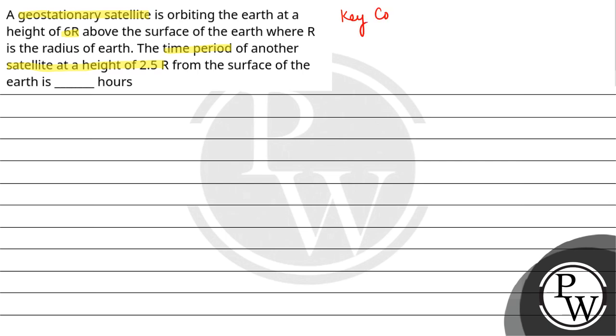So our key concept here is Kepler's third planetary law. If T is the time period of a body revolving in an orbit of radius R, then the relation is that T square is directly proportional to cube of radius.